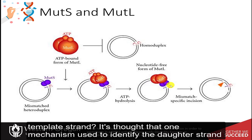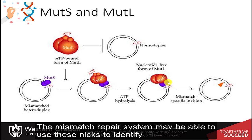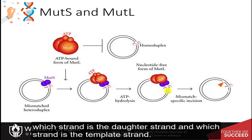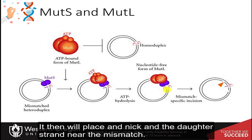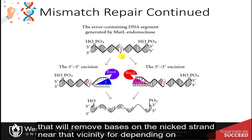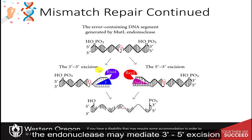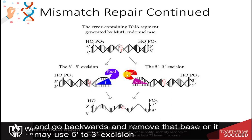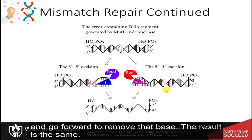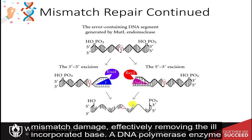It's thought that one mechanism used to identify the daughter strand is the presence of nicks in the Okazaki fragments. The mismatch repair system may be able to use these nicks to identify which strand is the daughter strand and which is the template strand. It then will place a nick in the daughter strand near the mismatch. Once the nick is in place, an endonuclease is activated that will remove bases on the nicked strand near that vicinity. Depending on which side of the nick the mismatch is located, the endonuclease may mediate 3' to 5' excision and go backwards to remove that base, or it may use 5' to 3' excision and go forward to remove that base. The result is the same — a DNA fragment that has had the bases removed in the vicinity of the mismatch damage, effectively removing the incorrectly incorporated base.